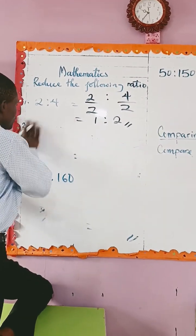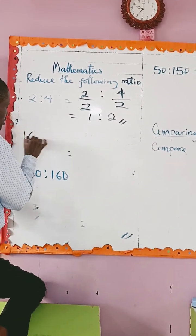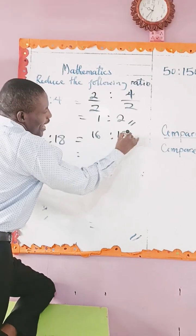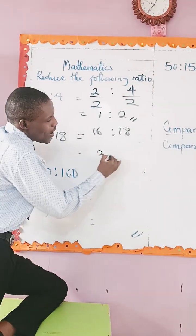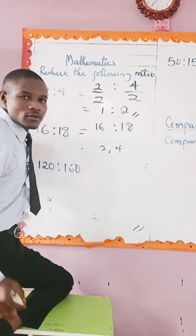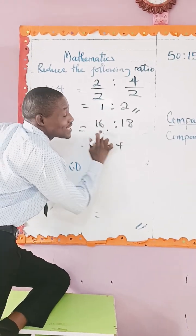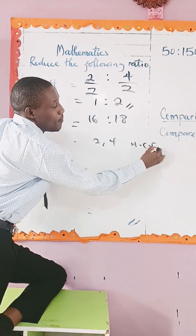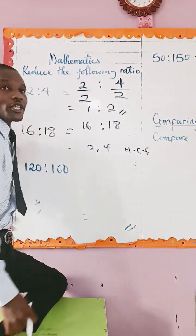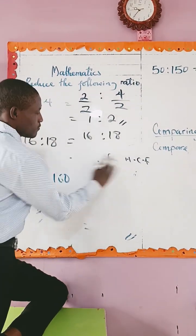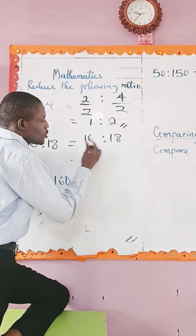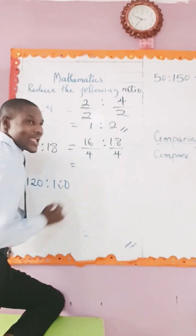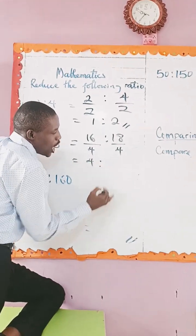We go to sixteen. Sixteen ratio eight. We have two and four — they are common factors of sixteen and eighteen. But we are going to pick the highest common factor, which is four. So divide by four, divide by four.